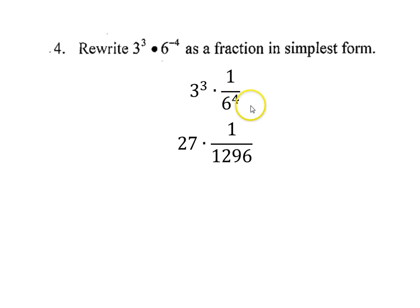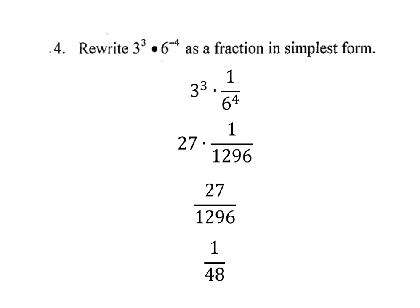And then 6 to the fourth is 1,296. So 6 to the negative 4th is 1 over 1,296. When I multiply these two things together, I get 27 over 1,296. And this fraction can be reduced because 27 goes into the numerator and the denominator. I get 1 over 48. So this fraction in simplest form is 1 over 48.